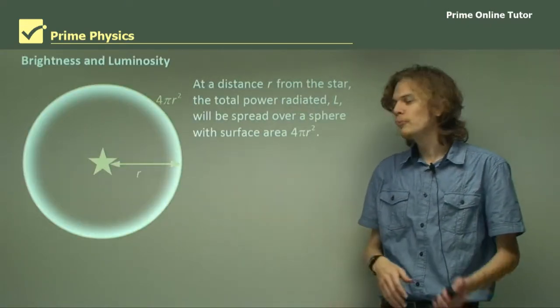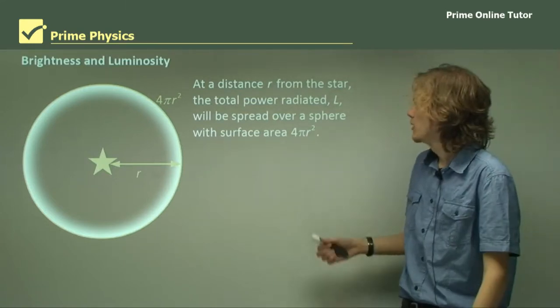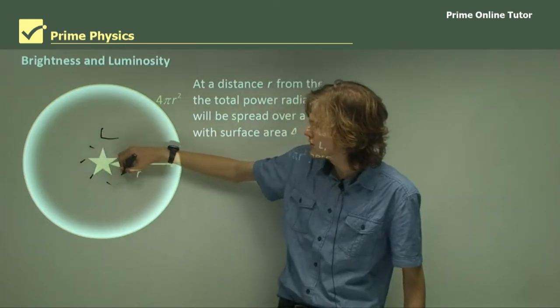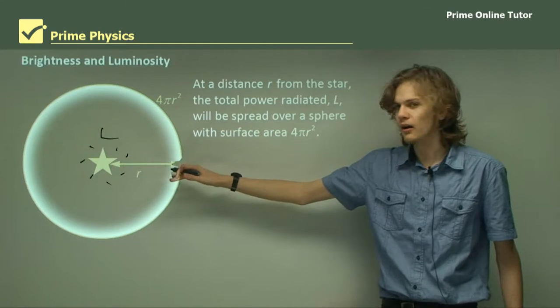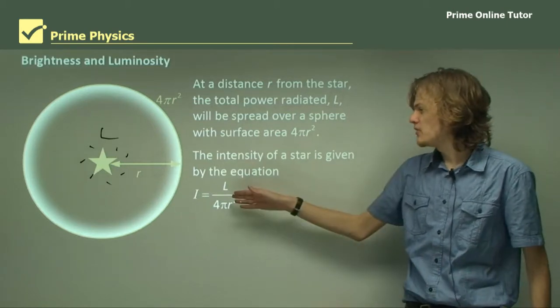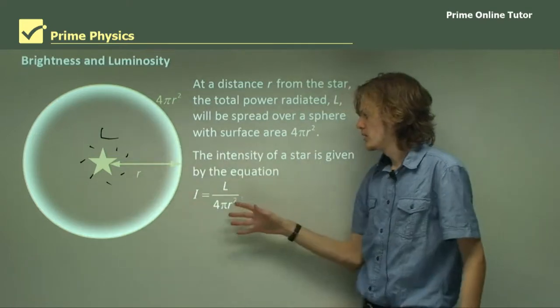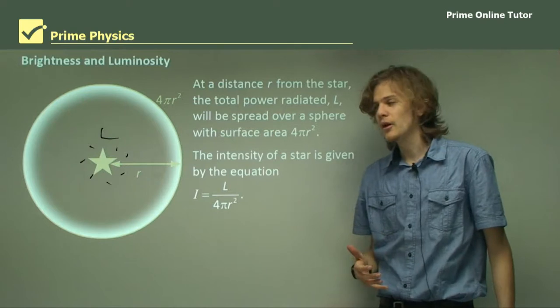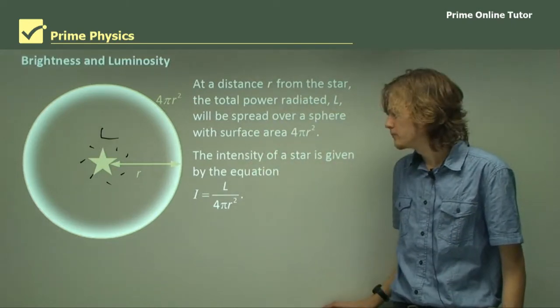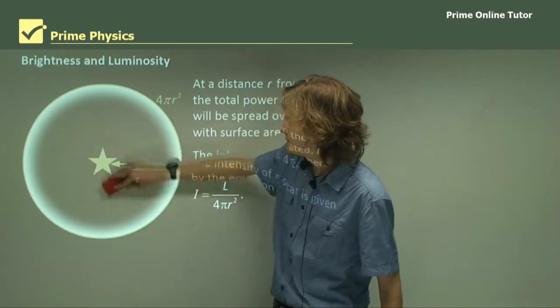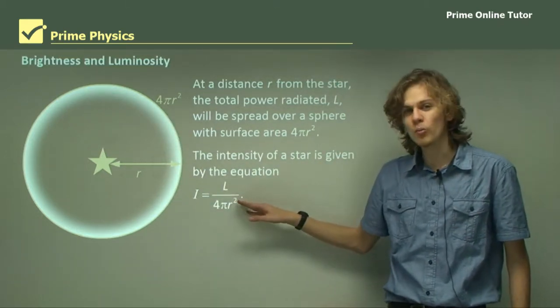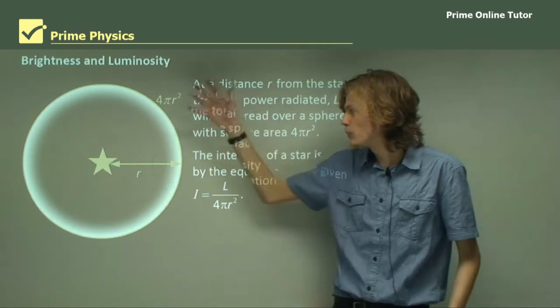At a distance from the star, the total power radiated will be L, the luminosity, spread over a sphere with surface area 4πr². So the intensity is given by I equals L over 4πr². This tells us how much power, how many watts from the star, is within a particular area. If we took the intensity at all points over the sphere and added them together, we'd get the luminosity.